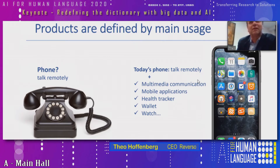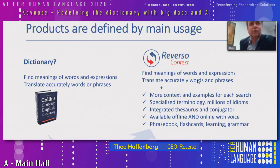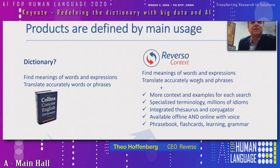With a phone, you can talk remotely, but with new phones you also have access to apps, wallets, and everything — yet you still call it a phone. It's the same for the dictionary. We created a new notion and wanted to find a word to define it, so we decided to keep the word 'dictionary,' because there's the same kind of gap between the traditional dictionary and what we can do with the universal context. The main goal is still to find meanings of words and expressions, translate them accurately, and use them in the right context.